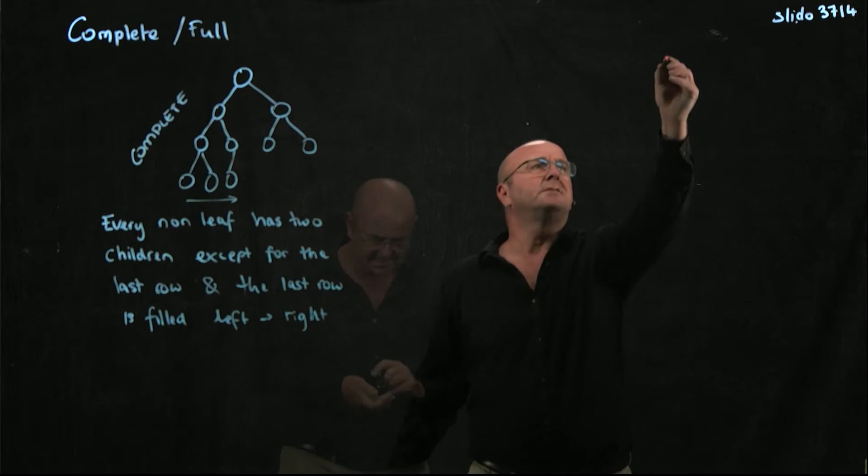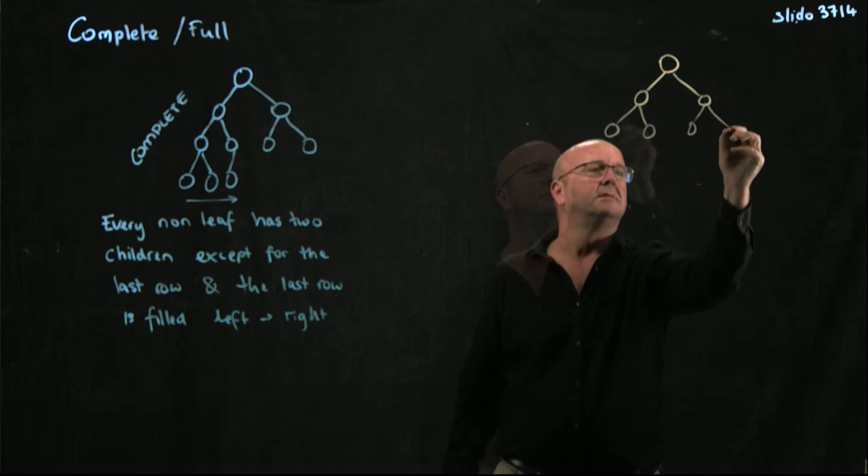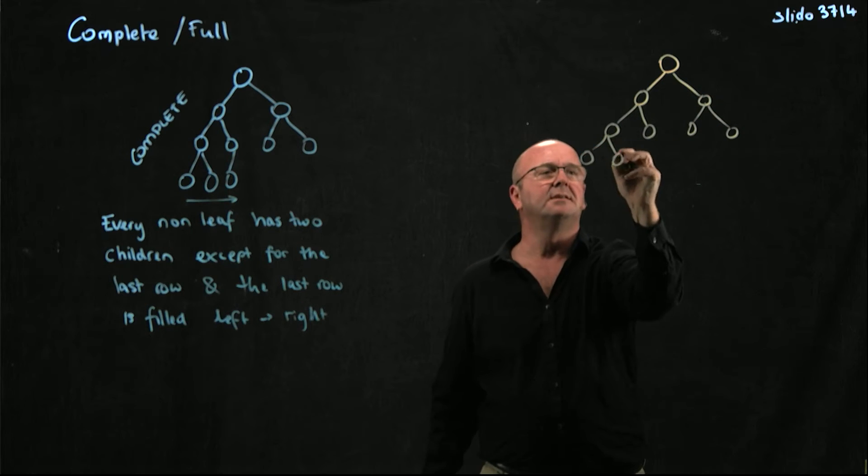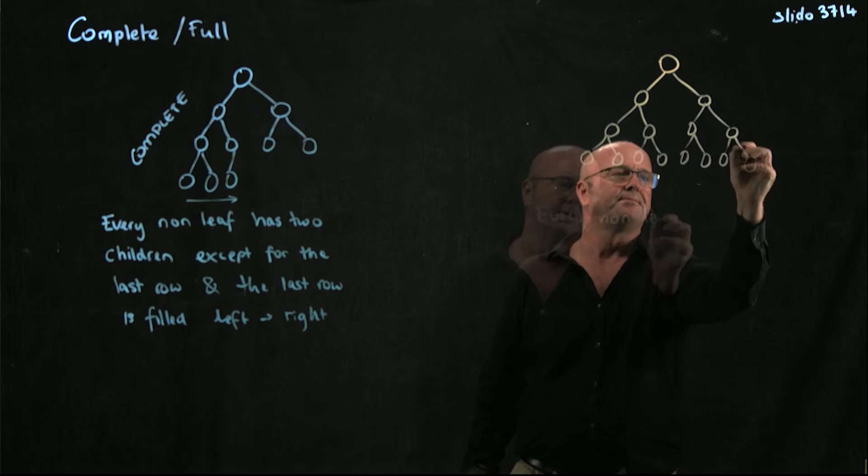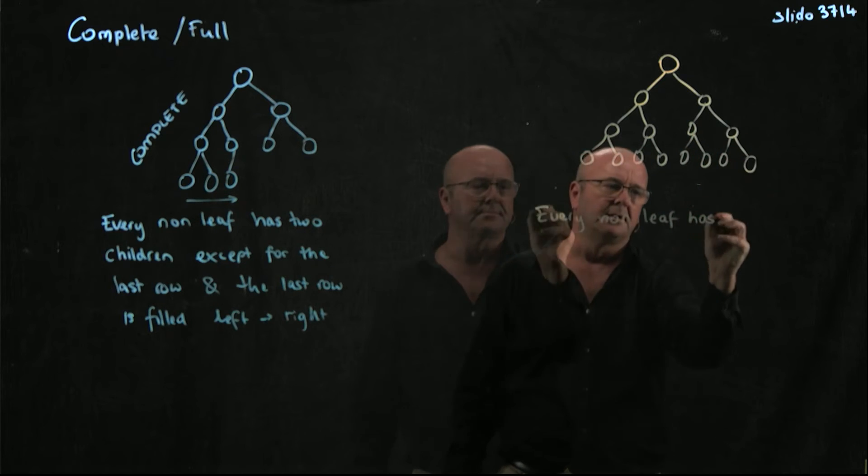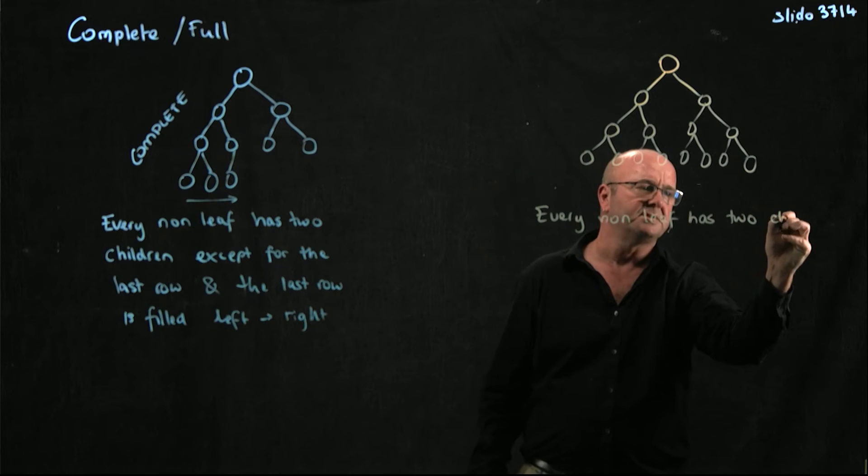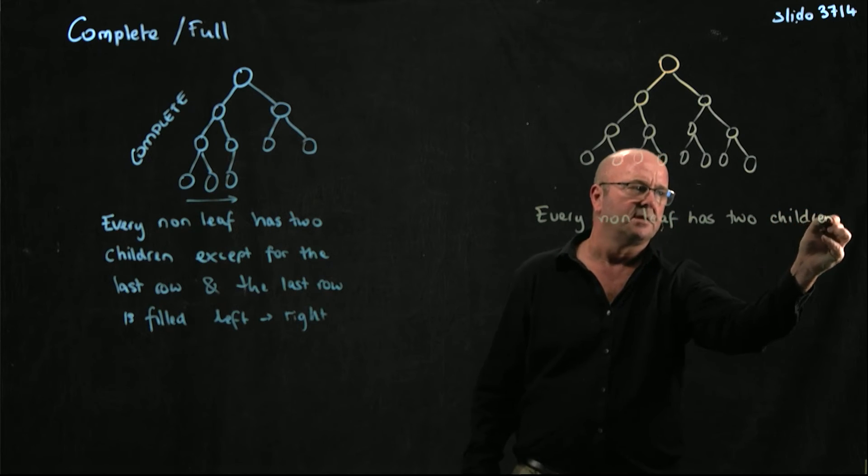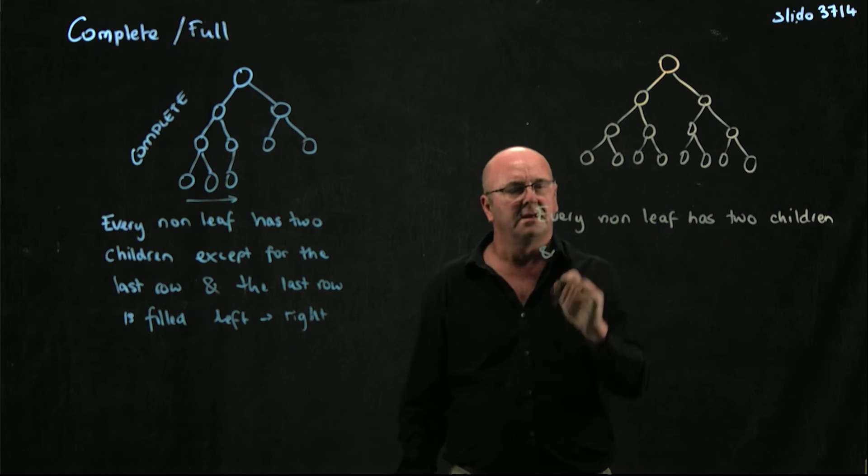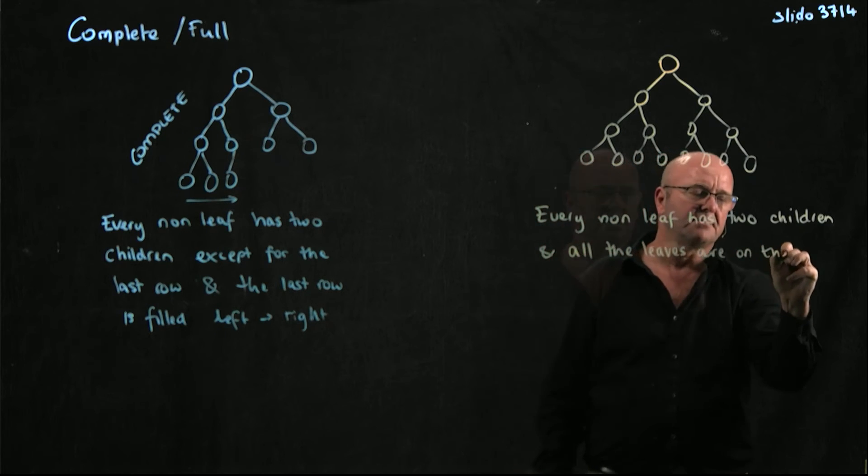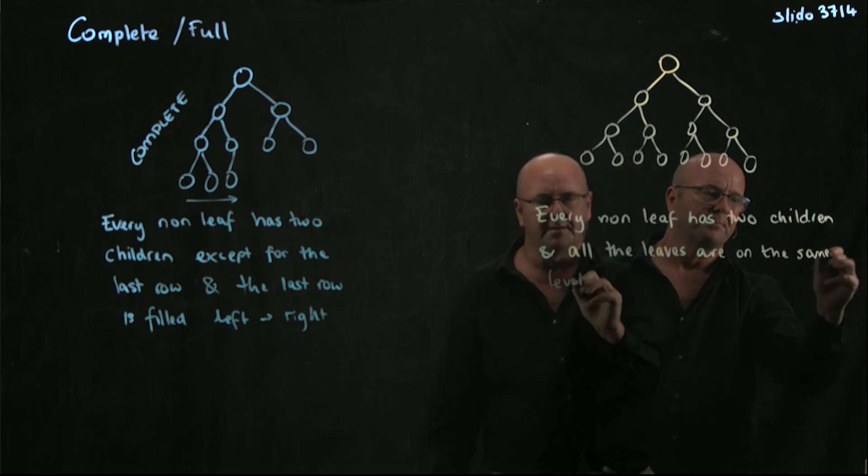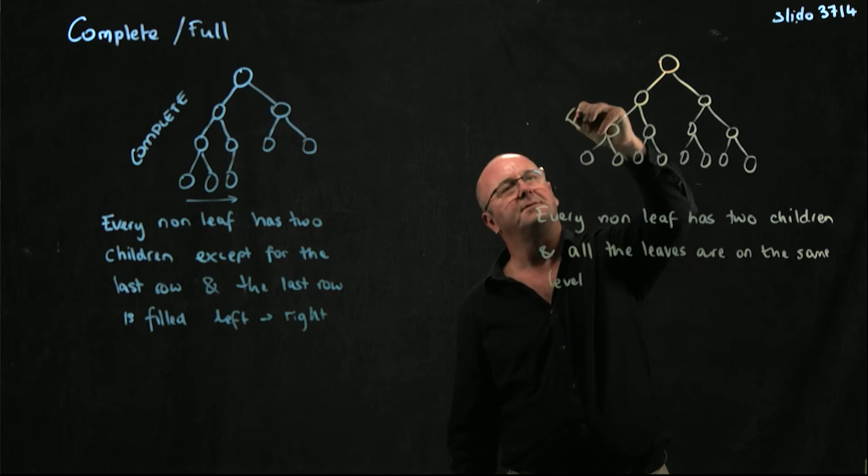In contrast, if we have a tree where every non-leaf has two children, and all the leaves are on the same level, then we call it a full tree.